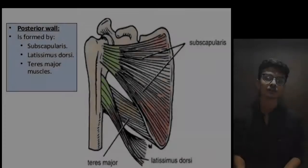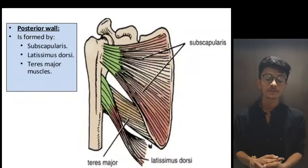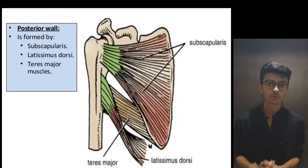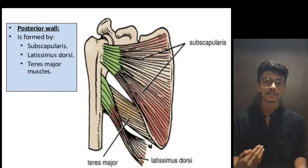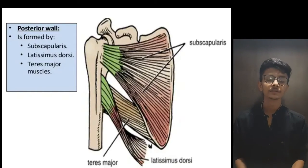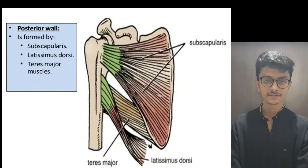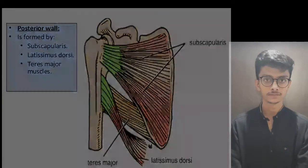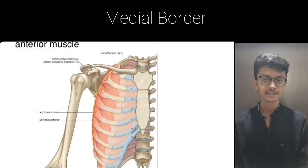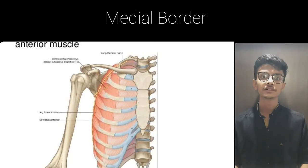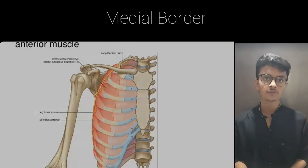The posterior border is formed by the subscapularis, then teres major and latissimus dorsi. The medial border is formed by the serratus anterior and the thoracic wall.